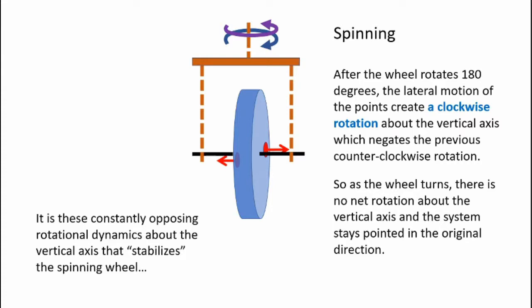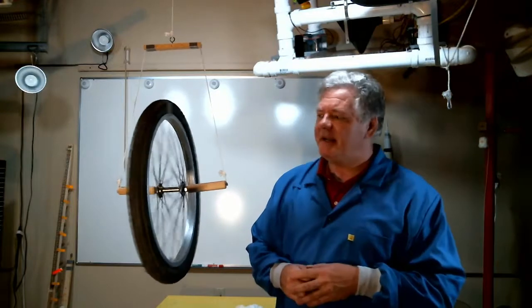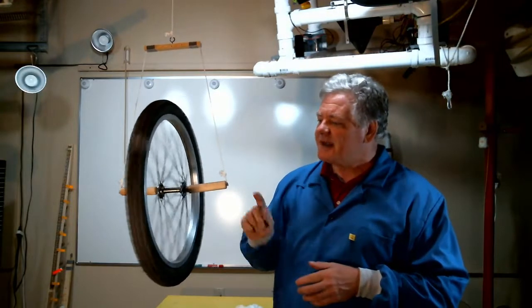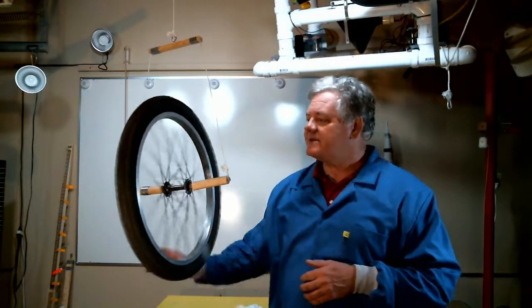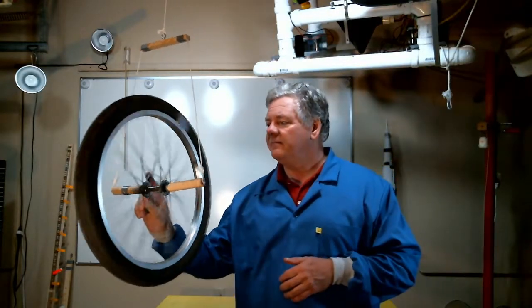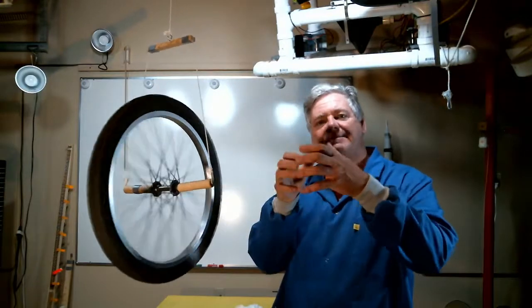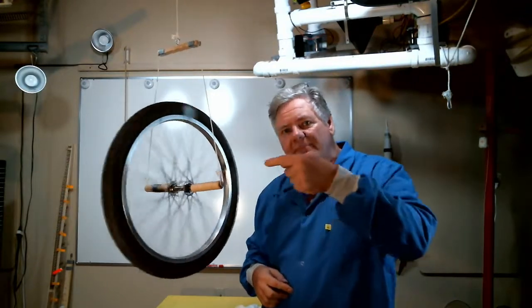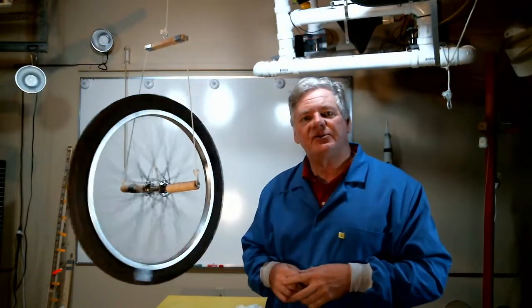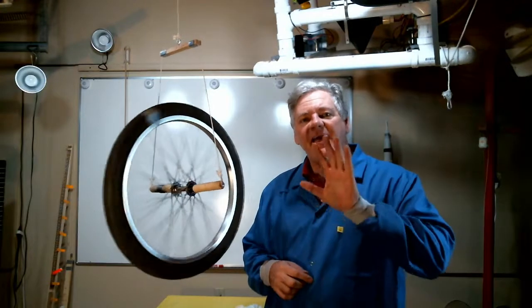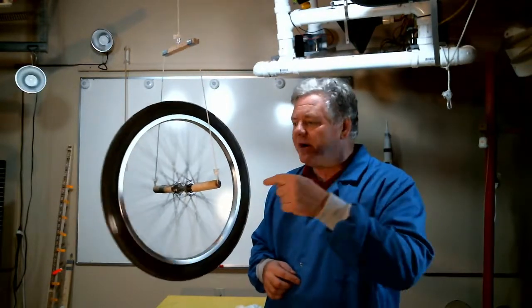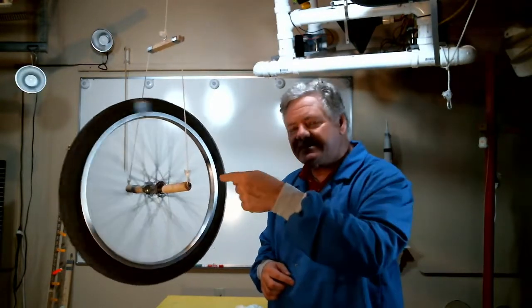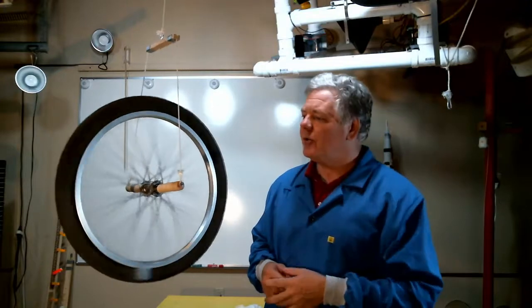Now let's take a look at the real system and see how it behaves. I have my wheel spinning. So now if I apply an impulse to the axle the system does not want to rotate about the vertical axis — the axle wants to remain pointed in the original direction. That tells me the system is stable about the axis of rotation. That's pretty cool.